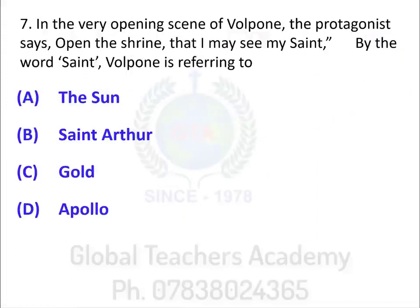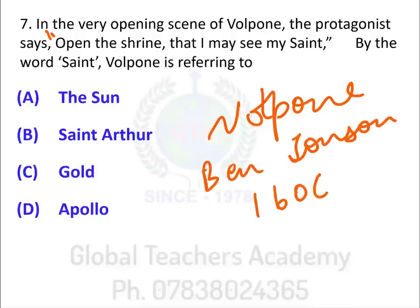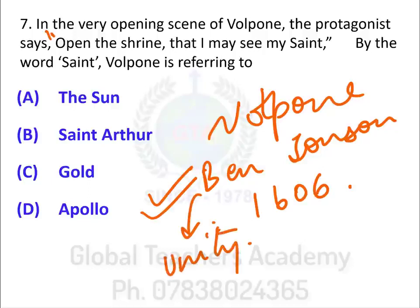The next question: in the very opening scene of Volpone, the protagonist says, 'Open the shrine that I may see my saint.' Volpone is a 1606 text by Ben Jonson — a very important playwright, often pitched against Shakespeare. Jonson was one author who followed the Aristotelian unities to the letter, which is why Samuel Johnson in his Preface to Shakespeare contrasts Ben Jonson against Shakespeare. You must see detailed summaries of The Alchemist, Volpone, and some more of his plays.